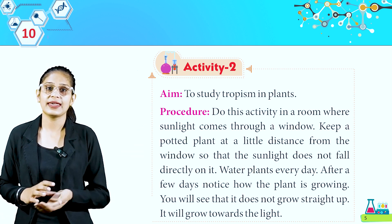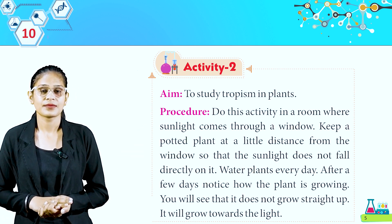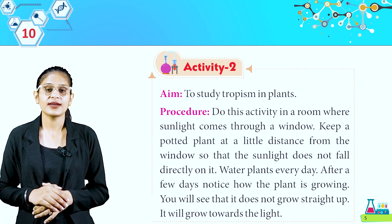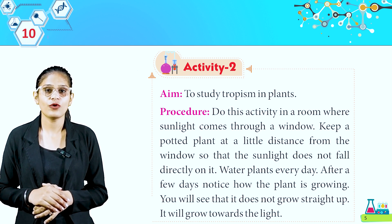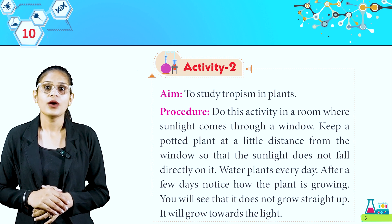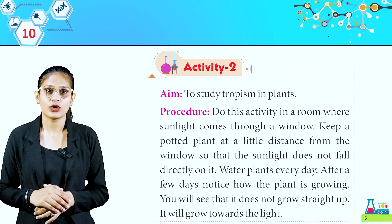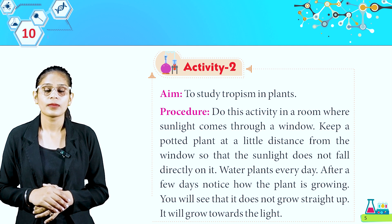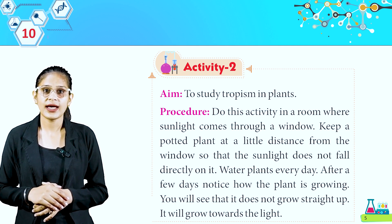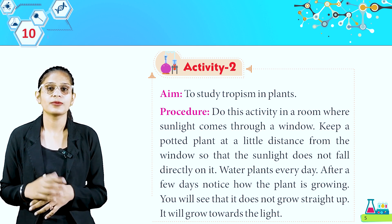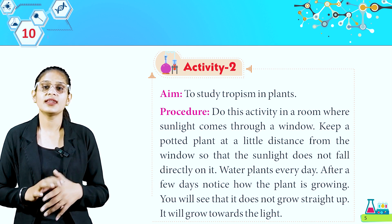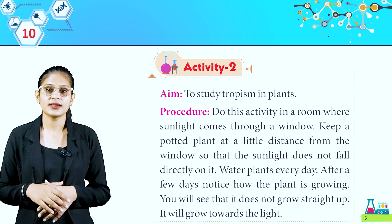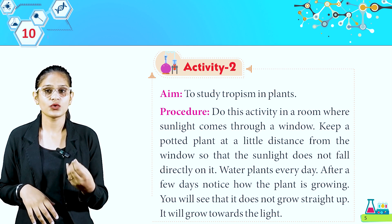Activity 2: To study tropism in plants. Do this activity in a room where sunlight comes through a window. Keep a potted plant at a little distance from the window so that the sunlight does not fall directly on it. Water the plant every day. After a few days, notice how the plant is growing — you will see that it does not grow straight up; it will grow towards the light. So if you keep a plant in a room where light comes from one side, your plant starts to tilt. That shows tropism.